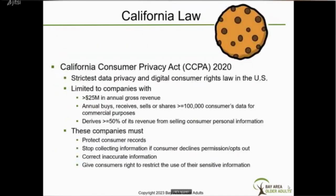The state of California has decided to follow the European GDPR — General Data Protection Regulation — that protects the digital privacy of EU citizens. California passed and implemented a law called the Consumer Privacy Act in 2020. While it's the strictest data privacy law in the United States, it is limited to very large companies or companies selling a lot of consumer data. You've probably noticed that when you go to websites you can now choose not to sell your personal information and choose privacy and cookie settings. Keep in mind, selling consumer data is still a greater than $10 billion industry.